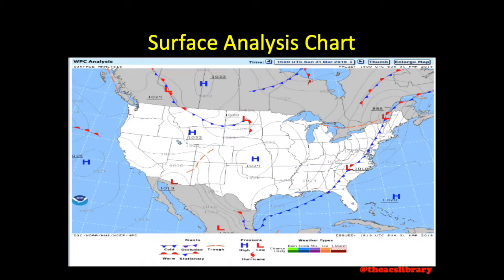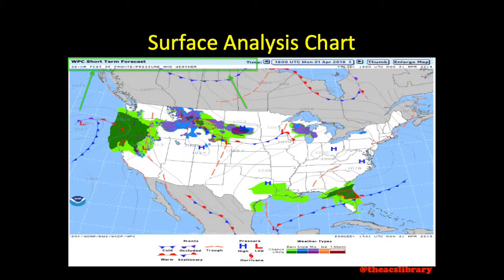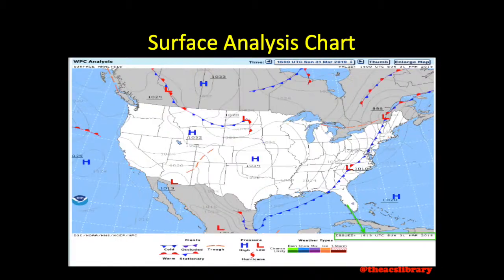Shown is a screenshot of a surface analysis chart that we will use as our example. View the valid time of the product just above the top right corner of the map shown. Adjusting the valid time to a later time period will show a short term weather forecast rather than a surface analysis chart. The time of issuance is listed just below the bottom right corner.